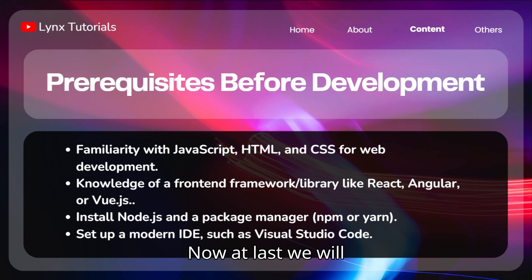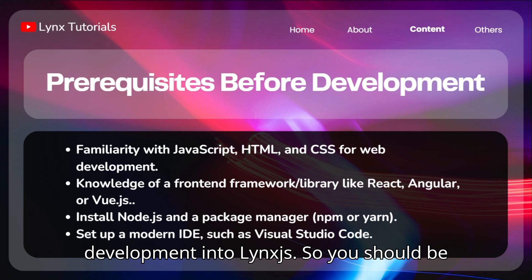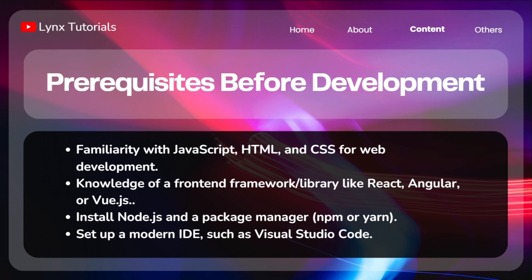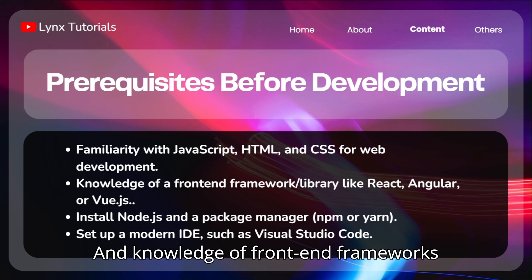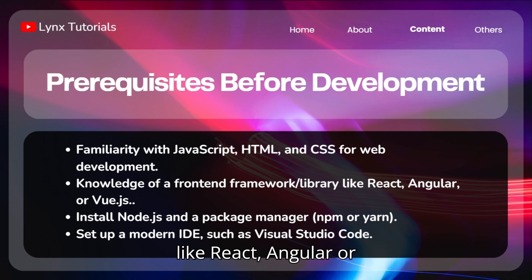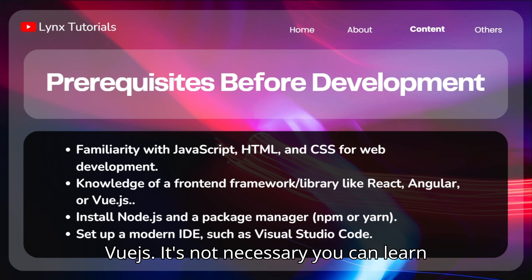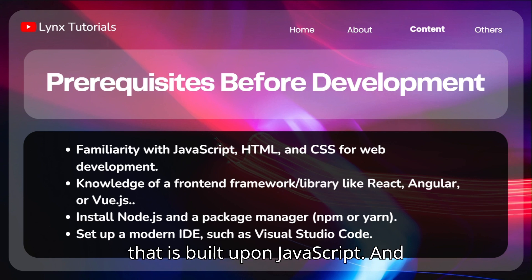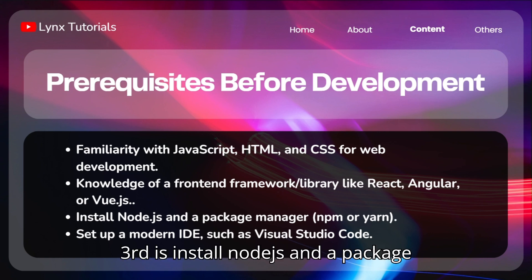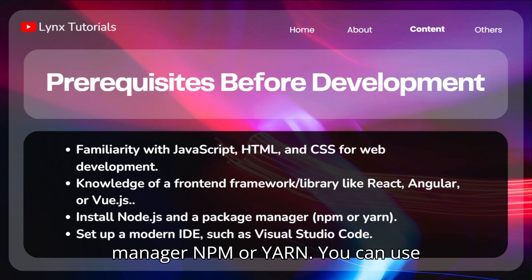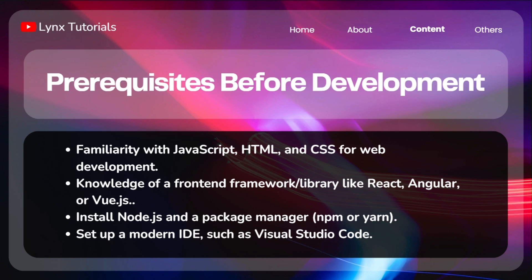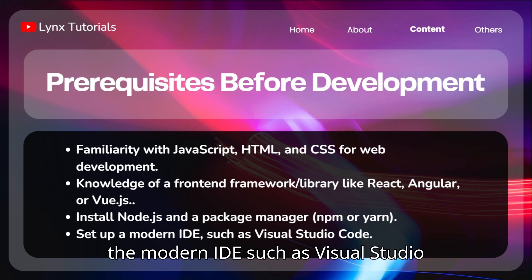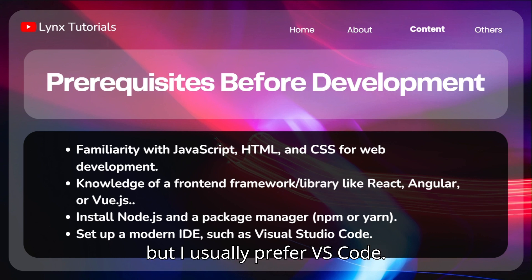Now at last we will see the prerequisites before starting development in links.js. You should be familiar with JavaScript — it's required. HTML and CSS for web development. Knowledge of front-end frameworks like React, Angular, or Vue.js is not necessary; you can learn links.js directly, but it's great to have. Also install Node.js and a package manager — npm, yarn, BUN, or PNPM. I mostly prefer BUN because it's the fastest. And set up a modern IDE such as Visual Studio Code — there are many IDEs, but I usually prefer VS Code.